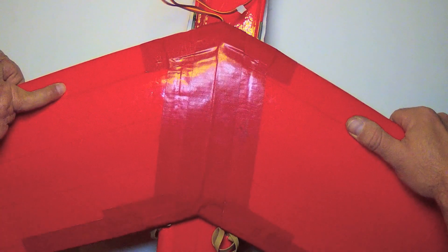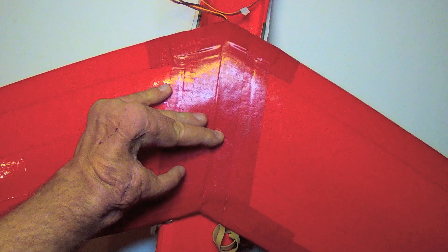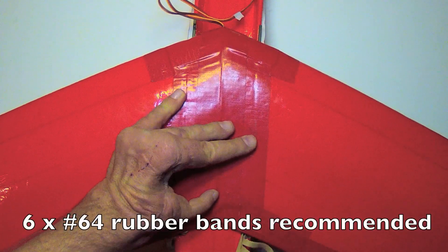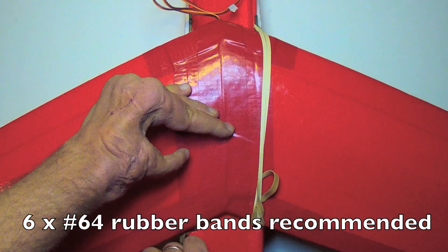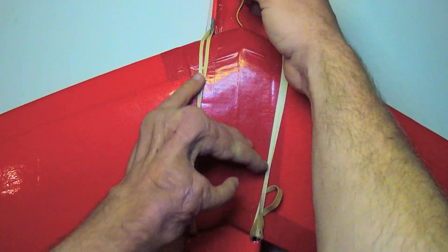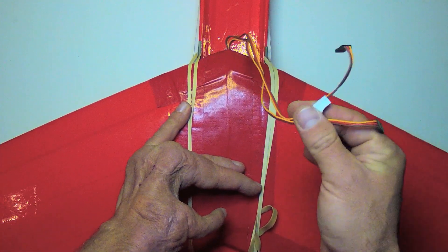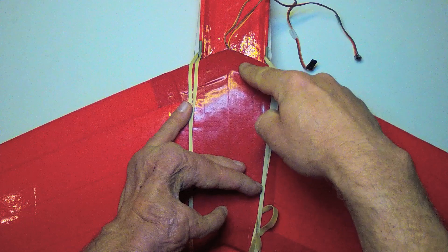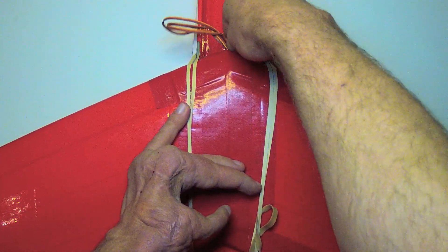Then the next step would be to situate the wing directly over the fuselage centered and then loop your rubber bands over one at a time. I've located my servo leads out the leading edge of the wing so they can be attached to the receiver up inside the fuselage.